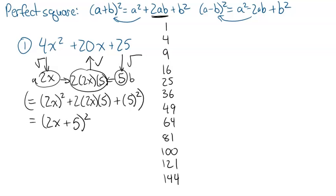Sometimes it will be that you have a perfect square at the beginning and end, but 2 times the a times the b won't actually equal the middle term. In that case, you have to go ahead and factor by decomposition — finding two numbers that add to the middle term and multiply to the first term times the last term.